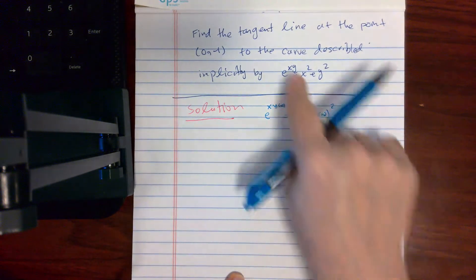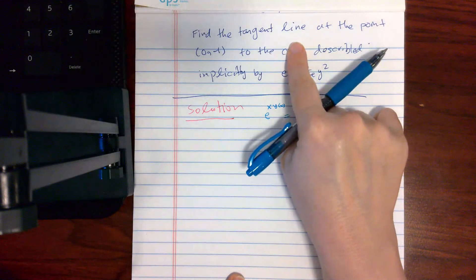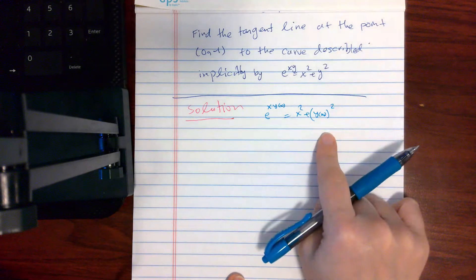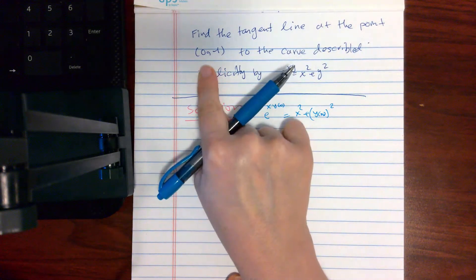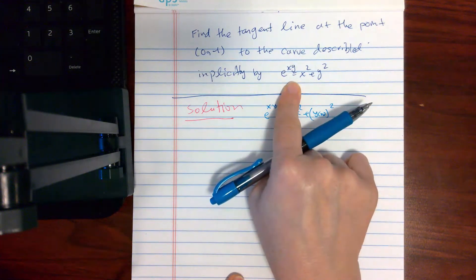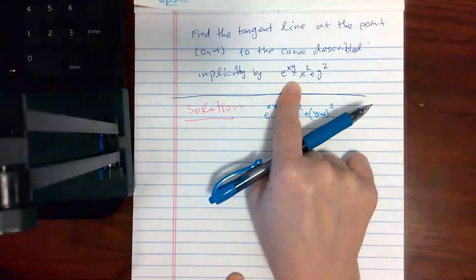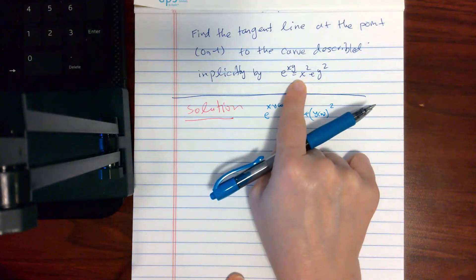And so what he's asking is the equation of the tangent line, and it gives you both x and y point. Again, because it's an implicit function, for x equal to 0, you can get more than one value of y. You can get plus 1 and minus 1.